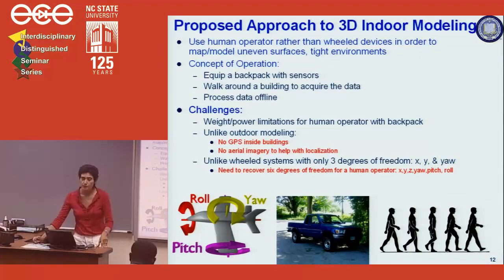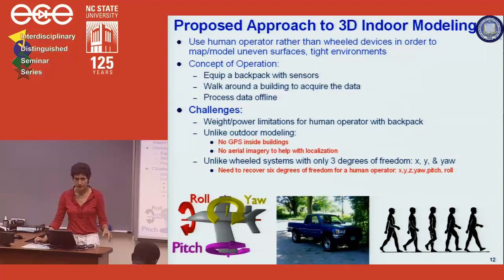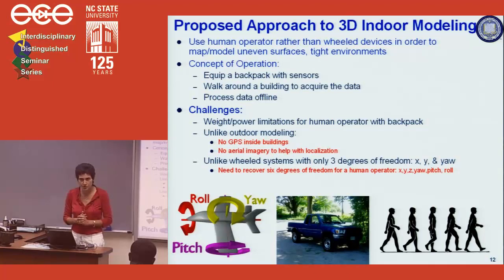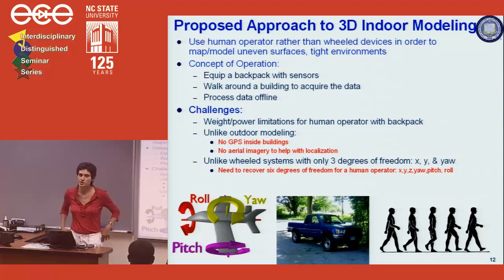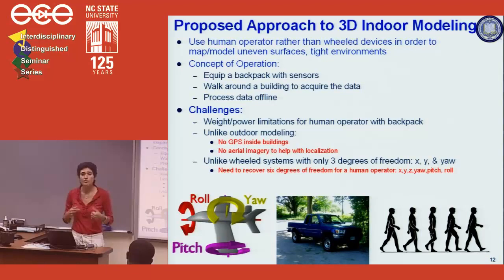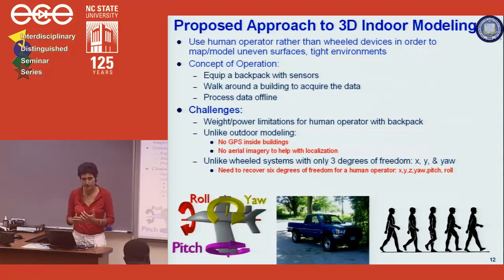Another major challenge is degrees of freedom. For a wheeled system like a car or truck, localization involves just three degrees of freedom: movement in X and Y, and rotation in the XY plane — the yaw. A truck cannot roll over or pitch. On the other hand, a human has associated gait, with non-zero pitch and roll and slight Z movement as we walk. To solve the localization problem, we have to solve a full six degrees of freedom pose estimation: X, Y, Z, yaw, pitch, and roll.